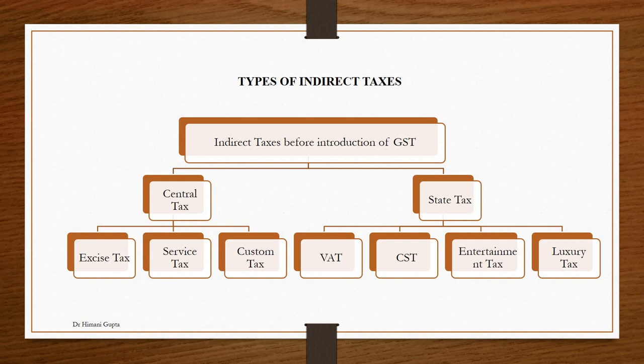The central government collected three taxes: the first was excise duty tax, second was service tax, and third was custom tax. After the introduction of GST, excise duty tax and service tax are subsumed under GST, but custom tax is still prevailing.